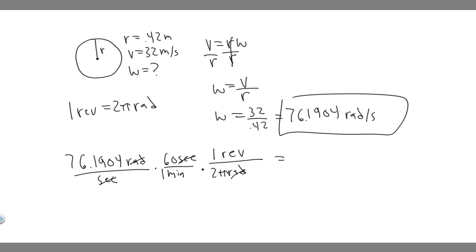76.1904 times 60 and then divide it by 2 pi. And when you do that, you'll get 727.5647.